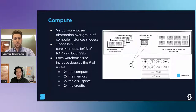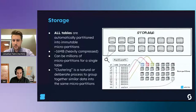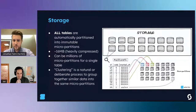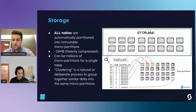This brings us to the storage layer. Snowflake automatically partitions all of your tables into immutable micro-partitions - small files Snowflake aims to keep around 16 megabytes when heavily compressed. There can be millions of these for a single table, but Snowflake manages them under the hood. An important concept here is clustering, which is a natural or deliberate process to group together similar data into the same micro-partitions.